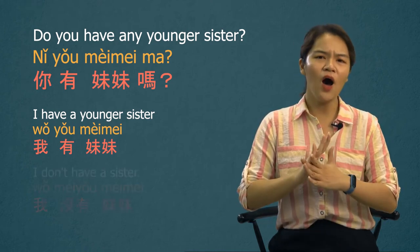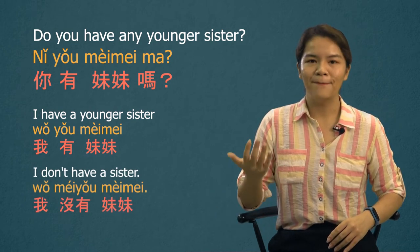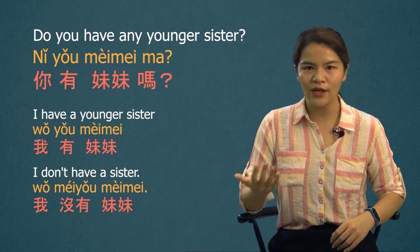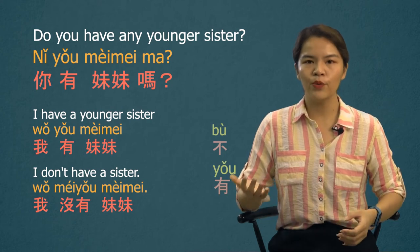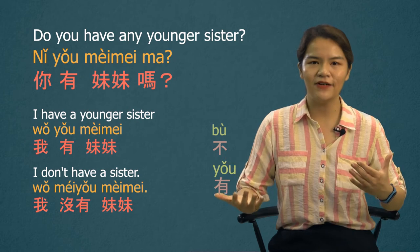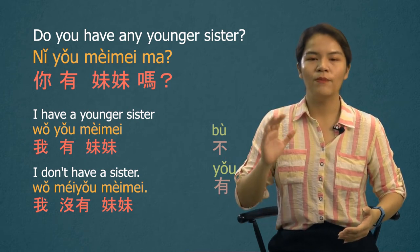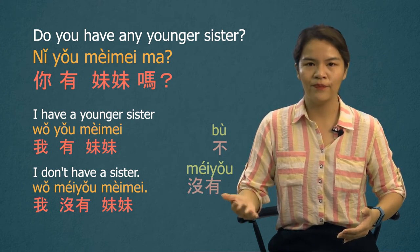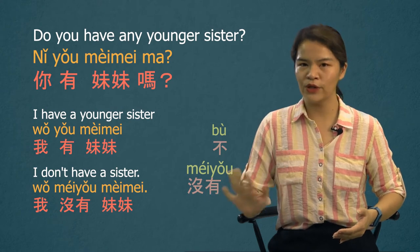If the answer is no: 我没有妹妹 — I don't have a younger sister. We have learned to use 不 as the negative in Mandarin. However, 有 is an exception — we must use 没有 together. So always say 没有, never 不有.